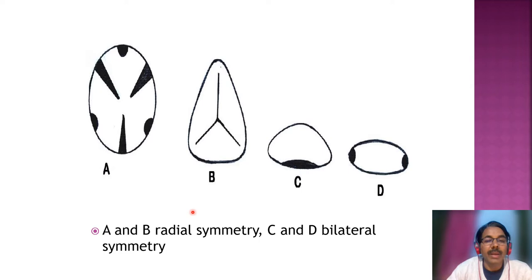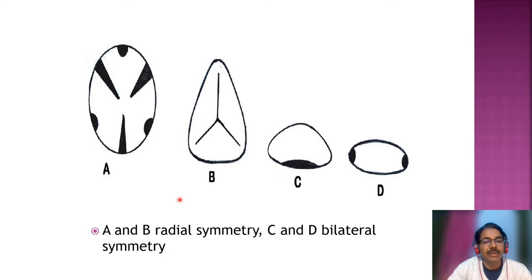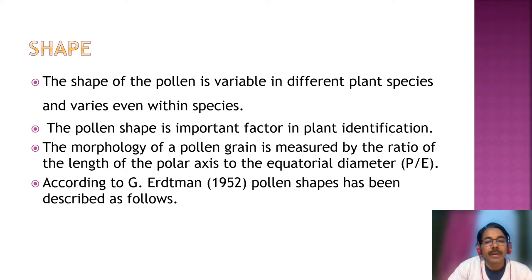In this diagram, A and B show radial symmetry, and C and D show bilateral symmetry. In bilateral symmetry in pollen grain, if you draw a line passing through it, it divides the pollen grain into two equal halves. Radial symmetry has two or more planes of division. That covers radial symmetry.